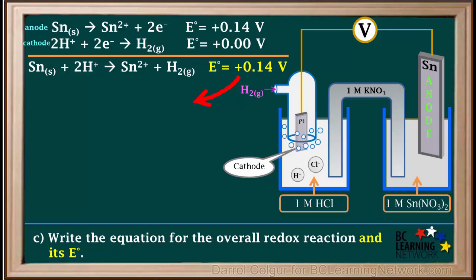Remember the E° value for an overall redox equation at standard conditions is called the standard cell potential.